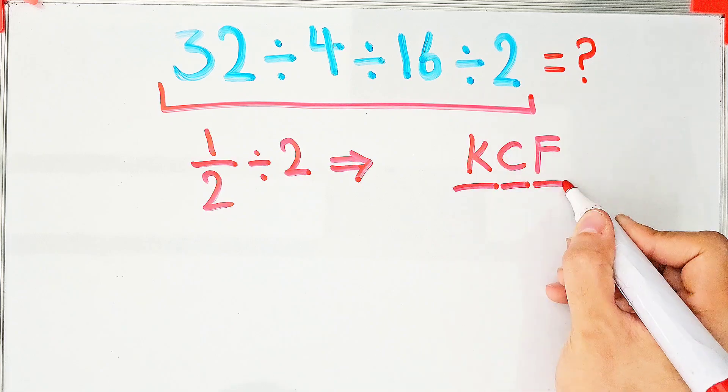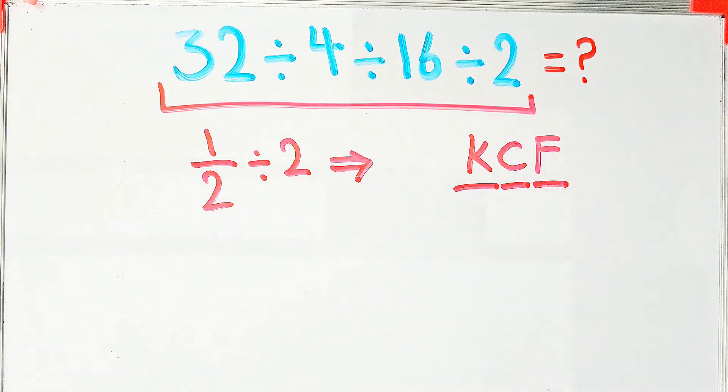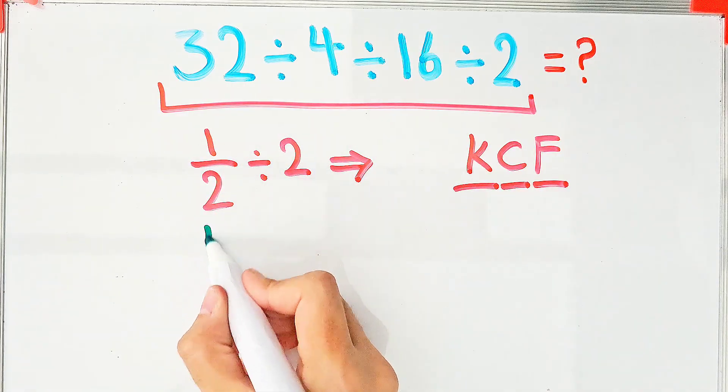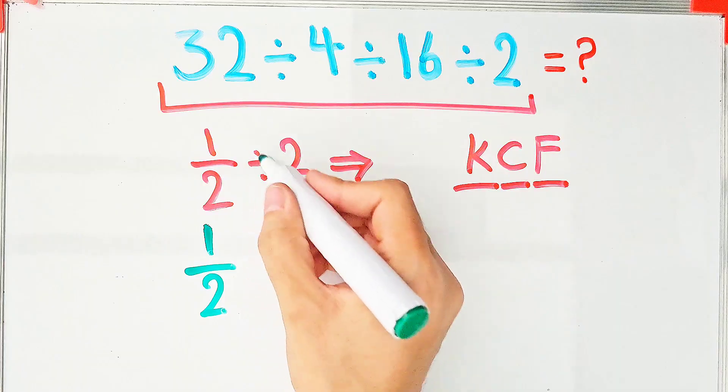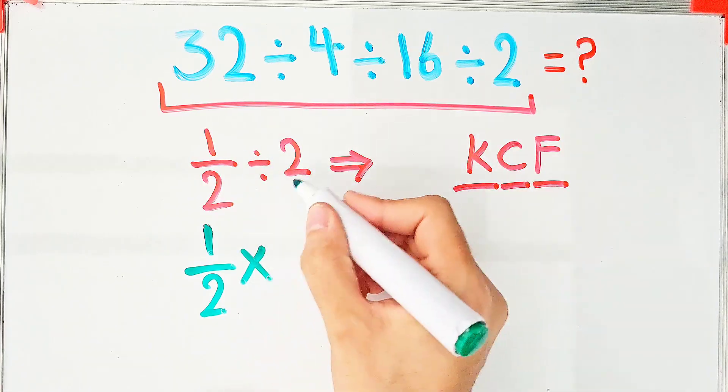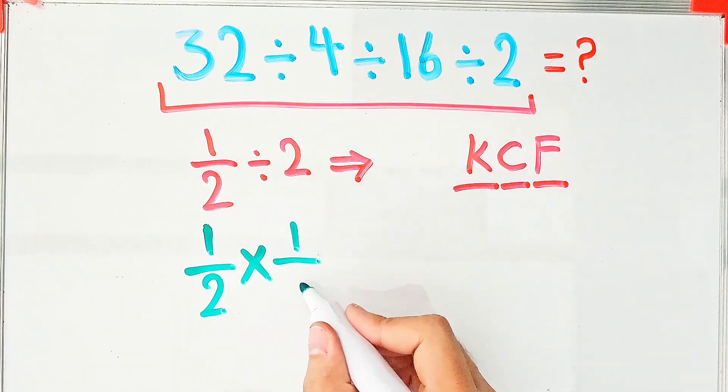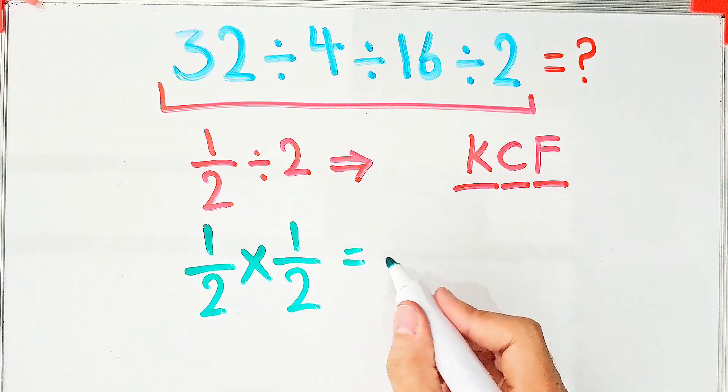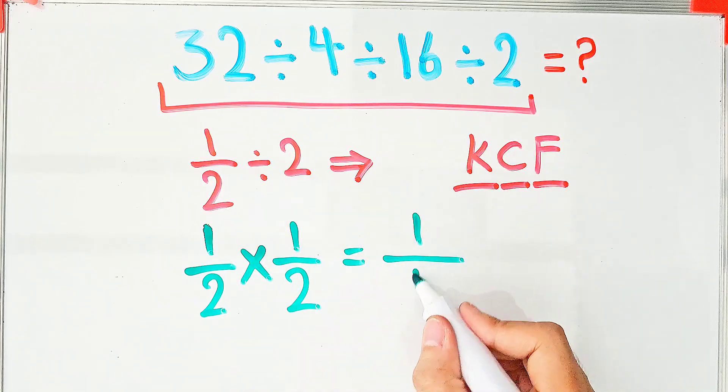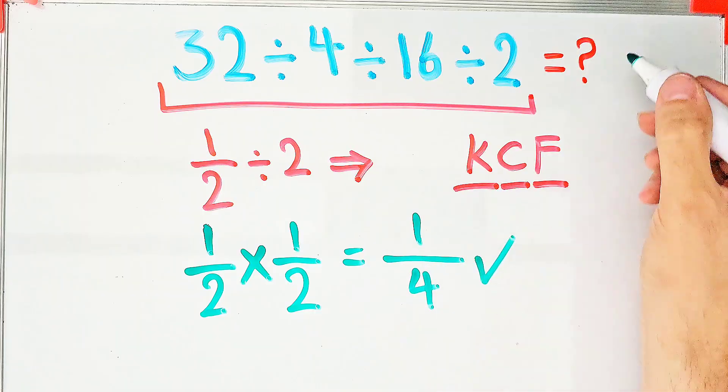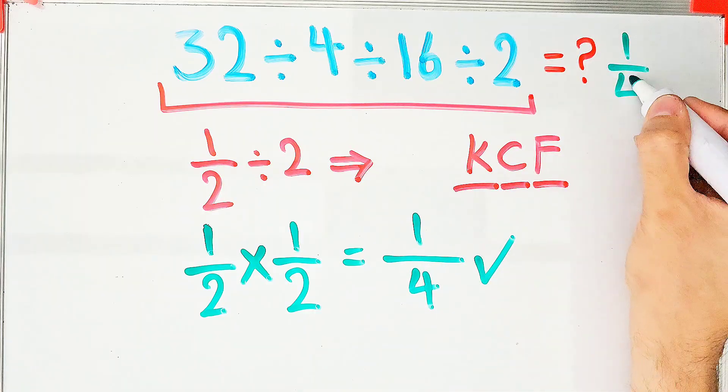In this question, we have a fraction that divided by a number. We keep the first fraction as it is, then we change the sign. After that, we flip the second number. Now we do the multiplication: 1 times 1 equals 1 and 2 times 2 equals 4. The final answer of this question equals 1 over 4.